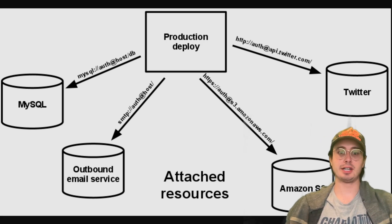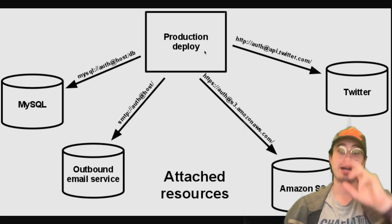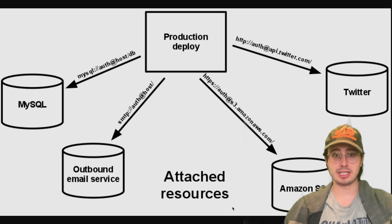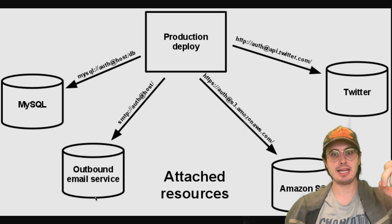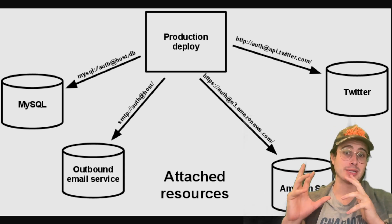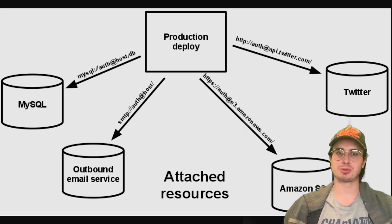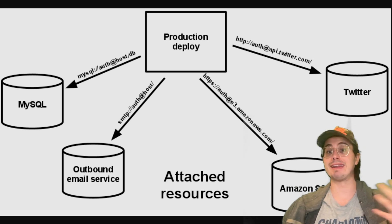The next thing to consider is backing services. Backing services like databases, message queues, and external APIs should all be treated as attached resources. That means you can switch between different service providers or swap out a local resource for a remote one without any code changes. The goal is to have providers — like a database provider or email service — as just modular entities. You design your application to not care what email or storage service you're using; it's all abstracted. These are just attached resources you can swap out for the best tool at any time without having to redesign your entire application.